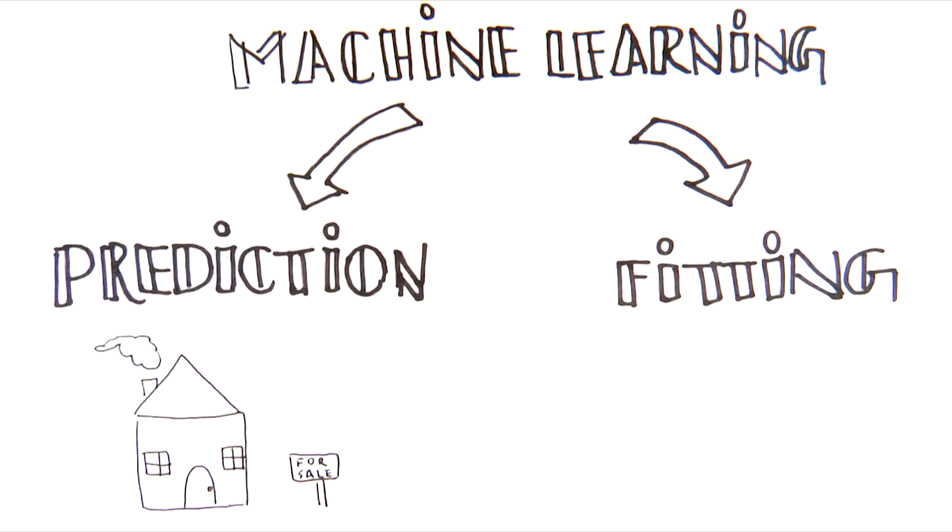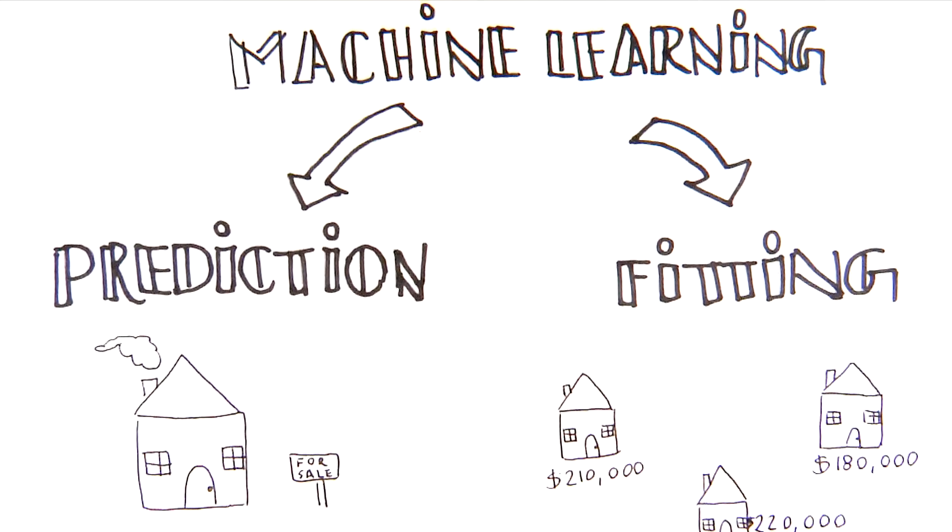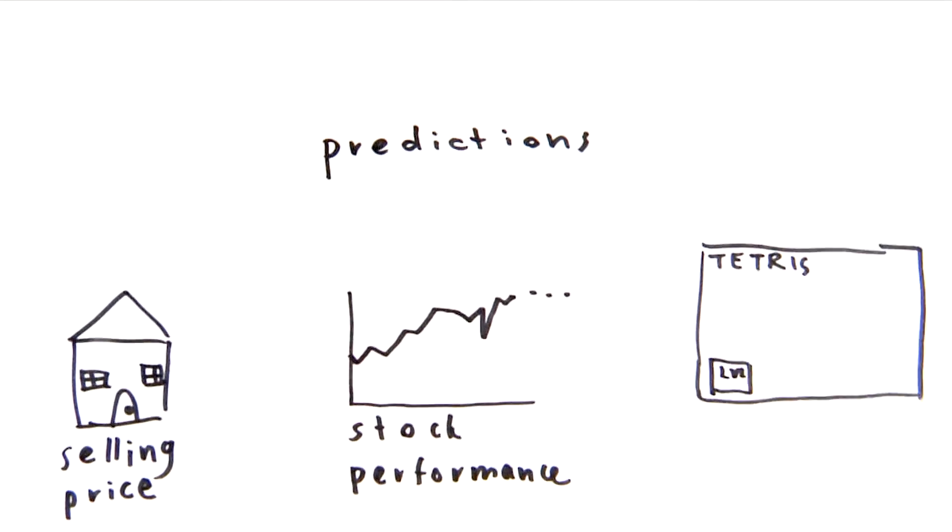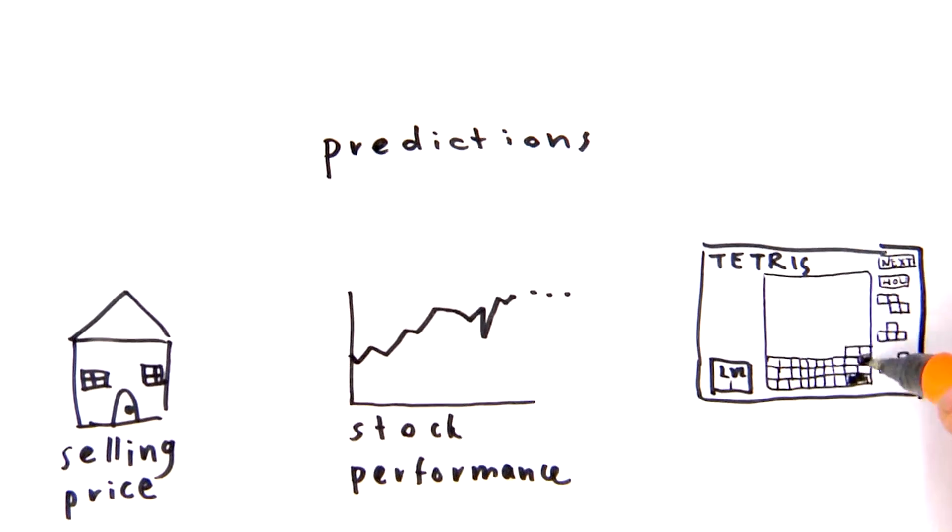Models are useful because they can make predictions about data. A common example is predicting the price of a house before it sells, by using other information about the house. But other examples include predicting the stock market using recent trends, or determining the best next move while playing a video game.